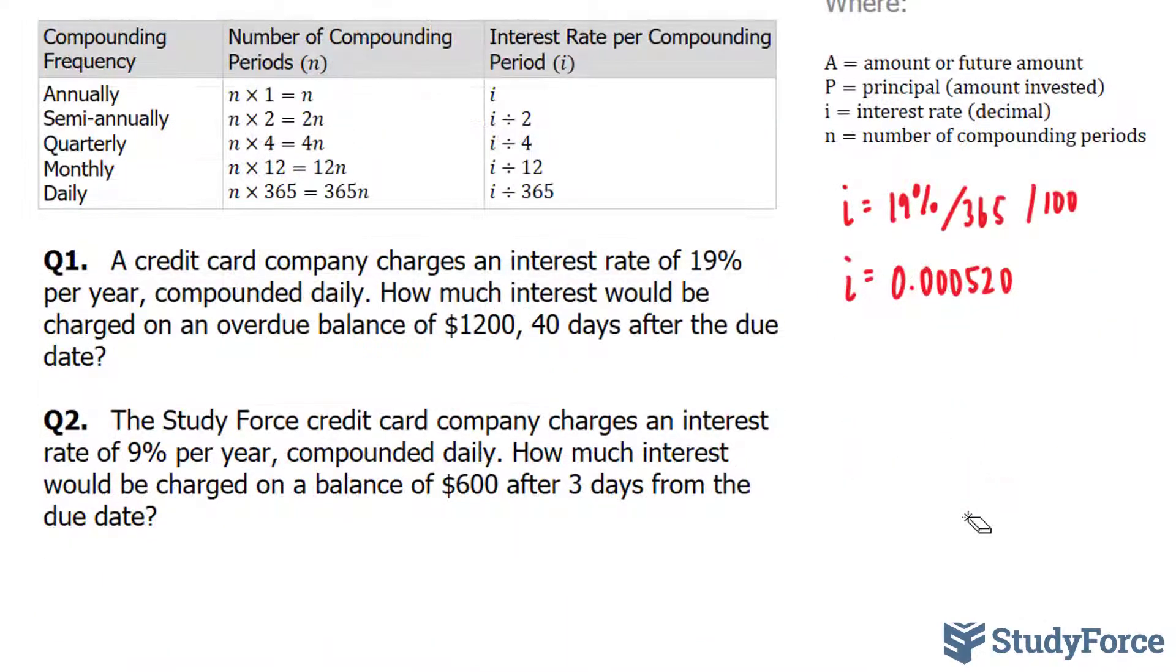Next, to find your n value, you'll notice that the interest is daily and the n value is 40 days. Since these units match, your n value is simply 40. You don't need to multiply this by anything because the units here agree with each other. And of course, our principle is 1,200.